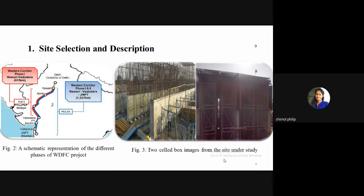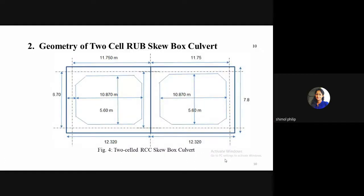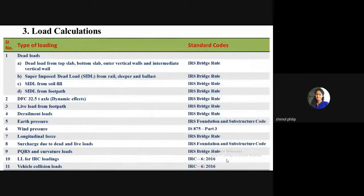The site is part of the Western Dedicated Freight Corridor project — a large Indian Railways project connecting industrial hubs. Data was collected from the under-construction site. The geometry of the two-cell RUB skew box culvert incorporates a skew angle of 15 degrees. The complex set of loadings acting on the box culvert includes dead loads (self-weight of box sections, superimposed dead loads from railway components), superimposed dead load from soil fill, and live loads from railways.